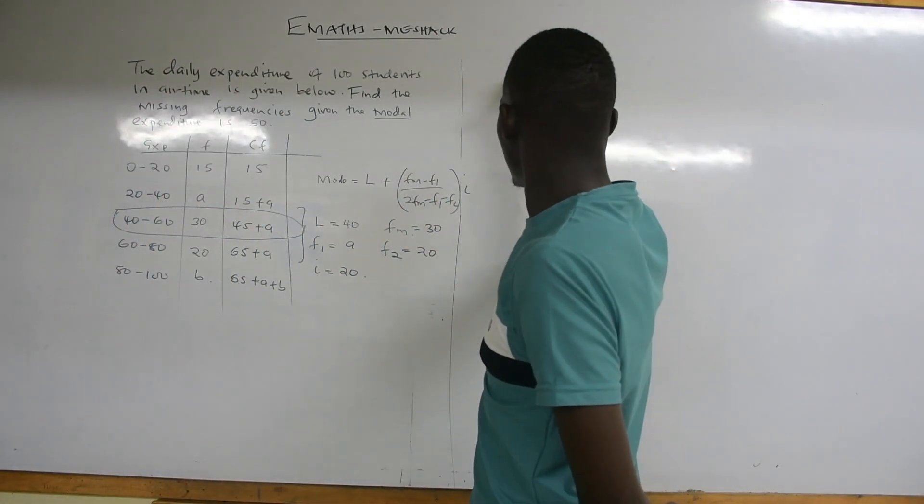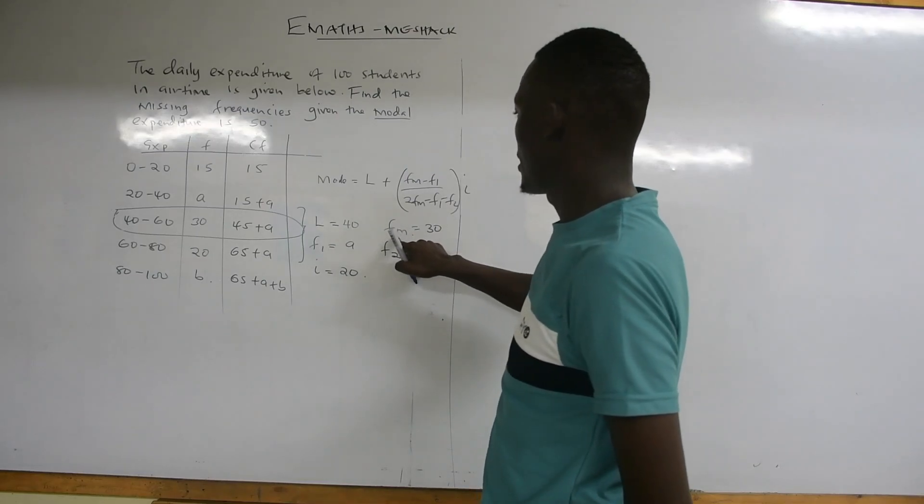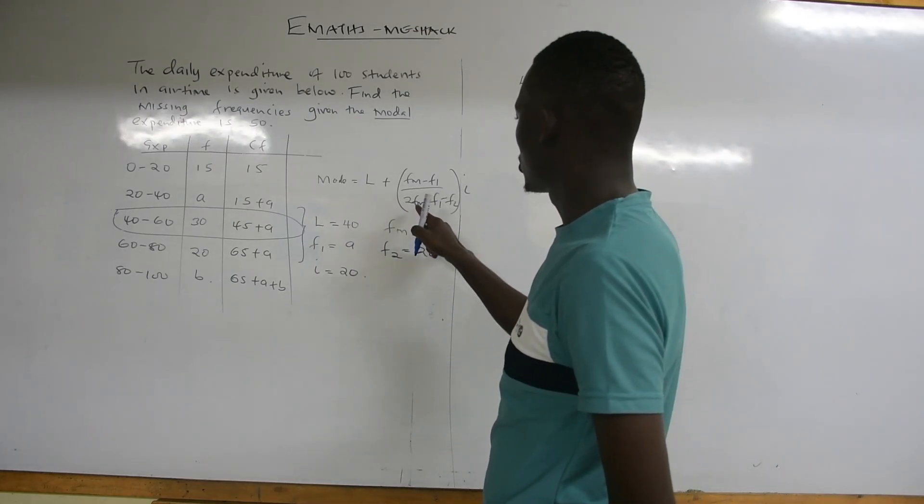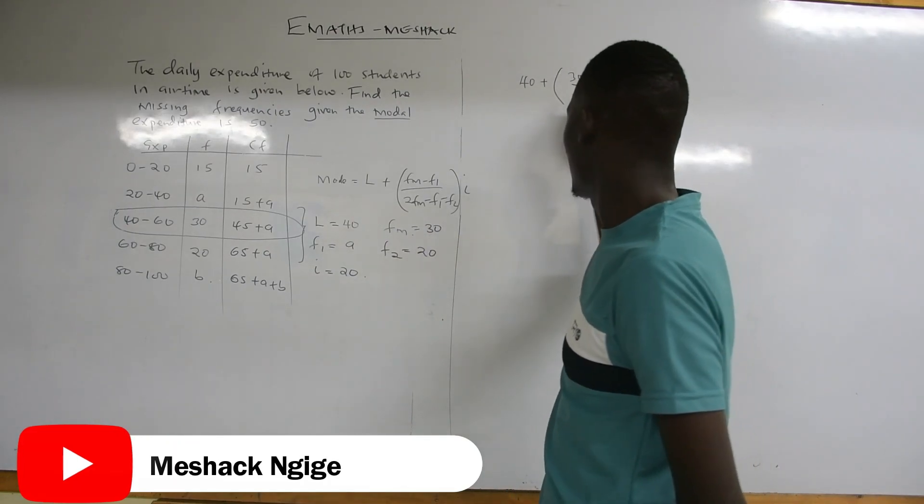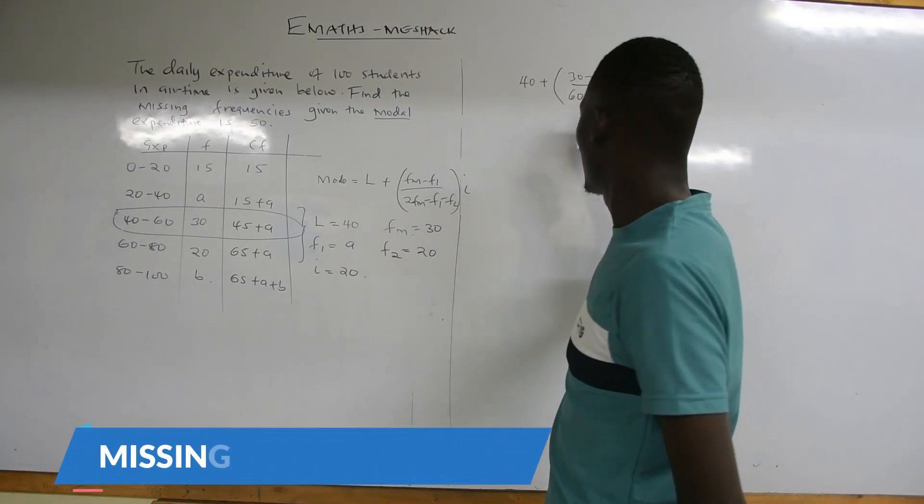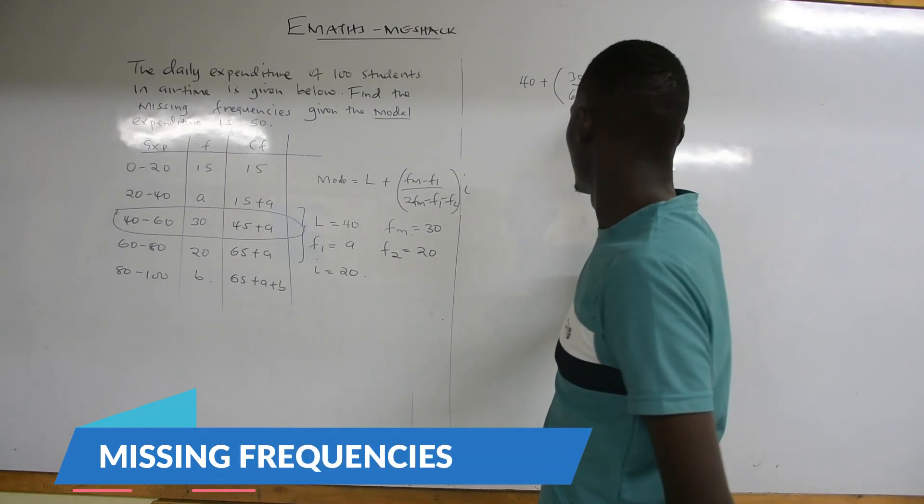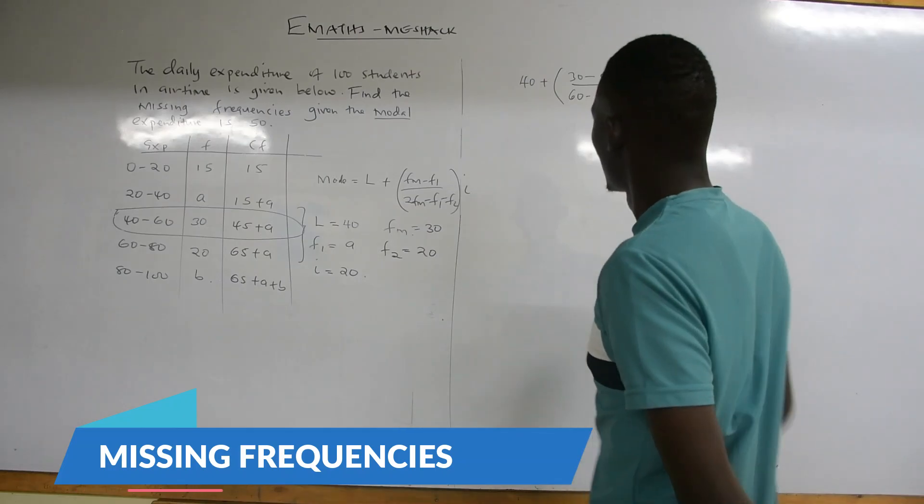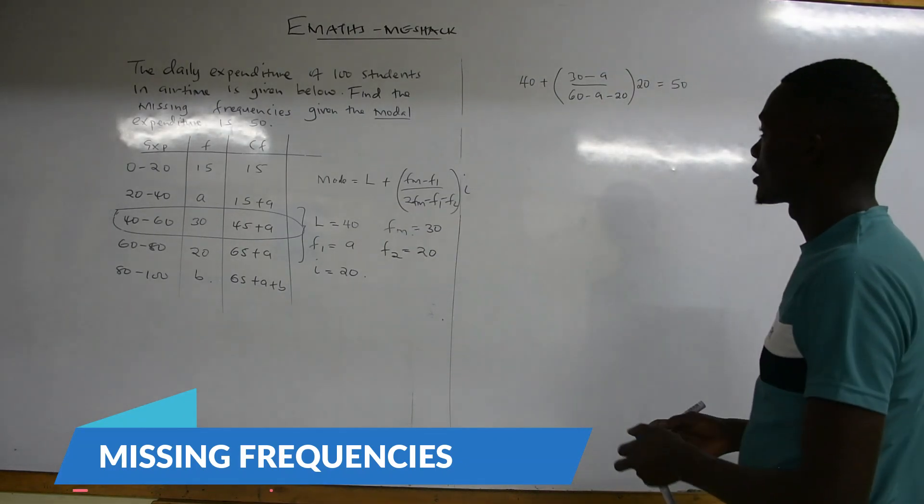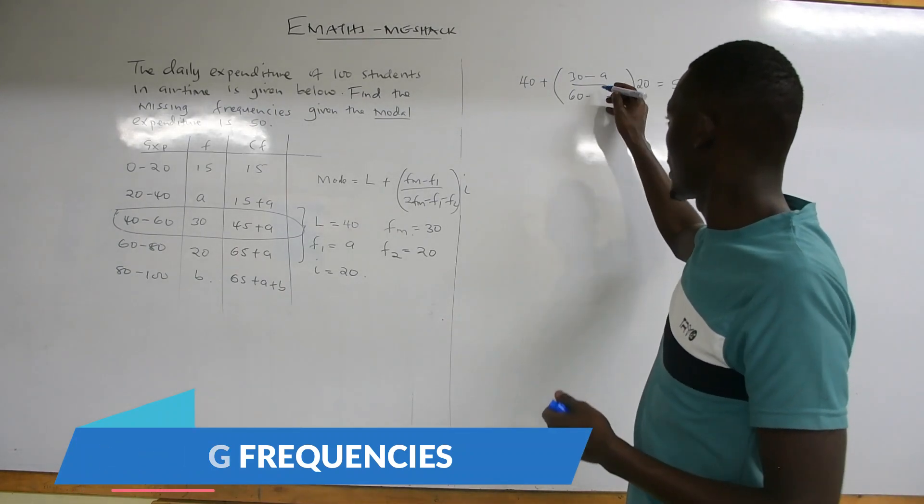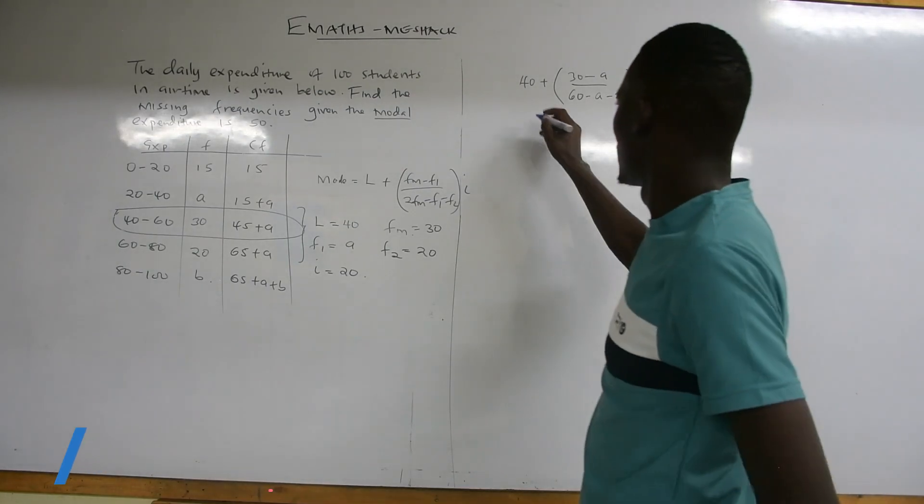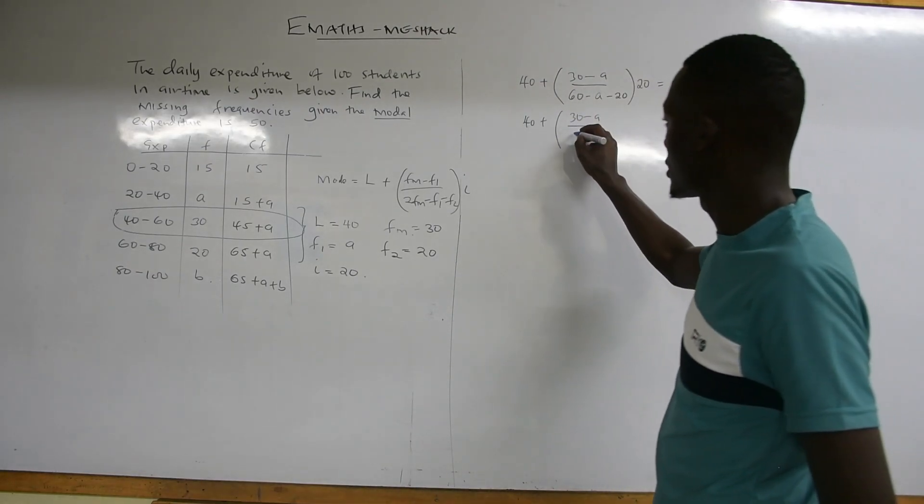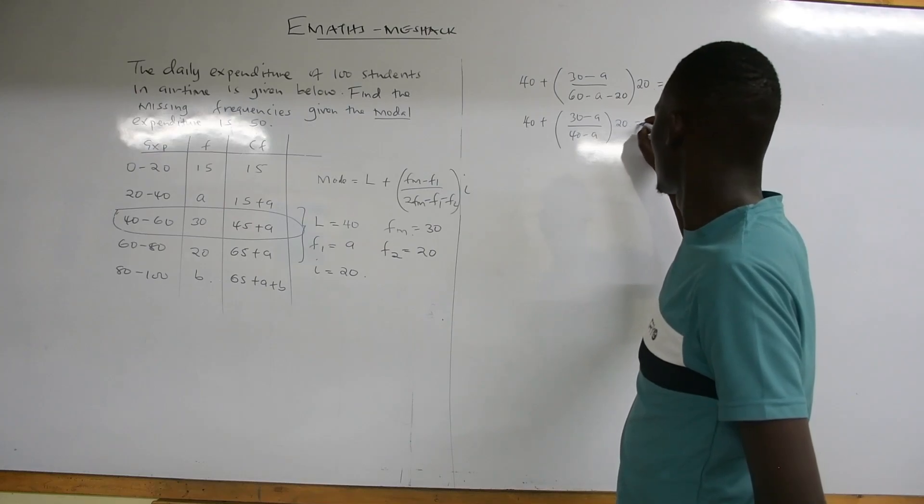By equating that, you will have 40 plus Fm is 30 minus F1, which is A, over 2Fm, twice of Fm which is 60, minus F1 which is A, minus F2 minus 20, then the interval is 20. That should give us 50. So we have 40 plus, the numerator remains 30 minus A, and 60 minus 20 gives us 40. So 40 minus A into bracket 20 equals to 50.